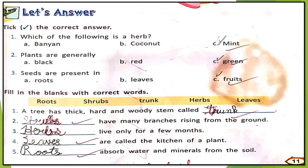Now let's do the exercise. Number one: tick the correct answer — which of the following is a herb? Option A: banyan, option B: coconut, option C: mint. Banyan is a tree, coconut is a tree, and mint is a herb. So the correct answer is option C.